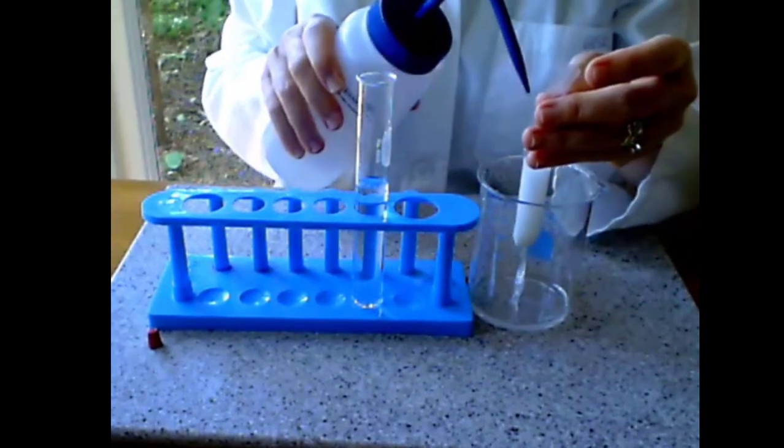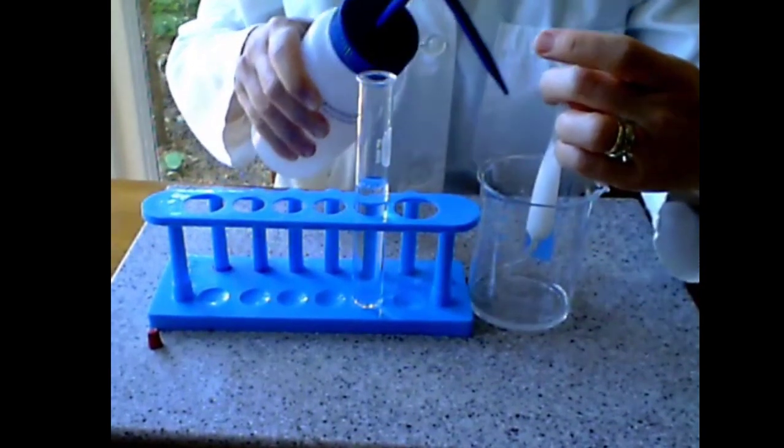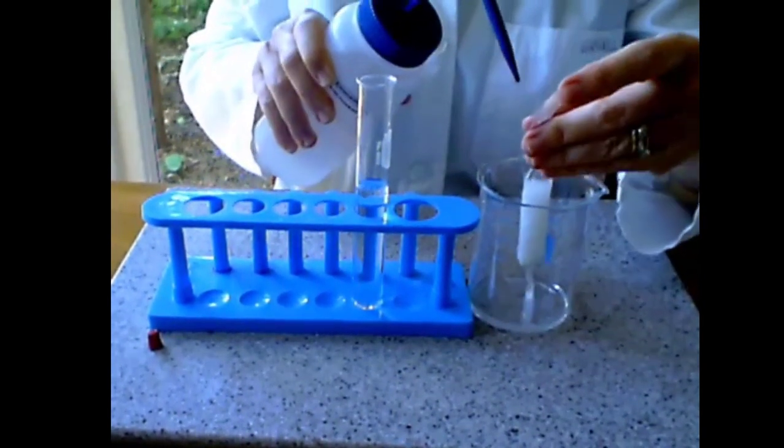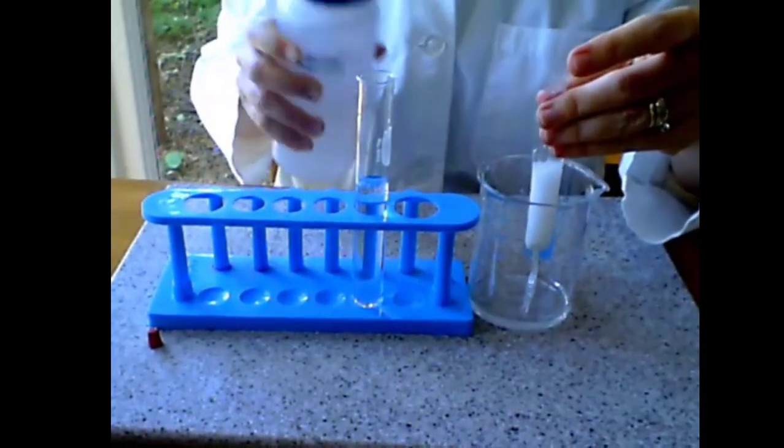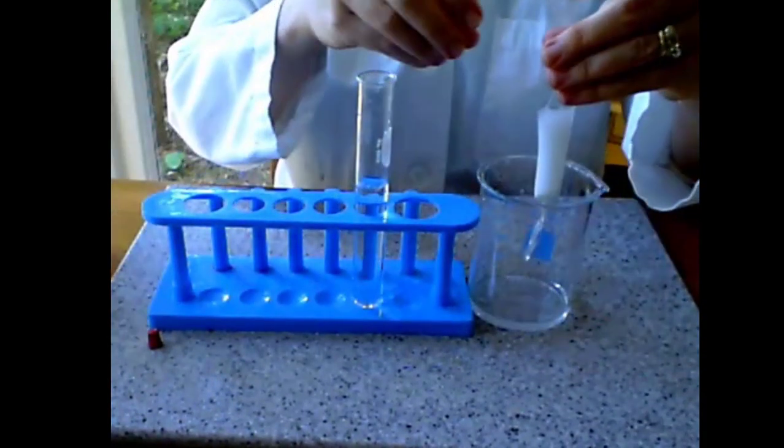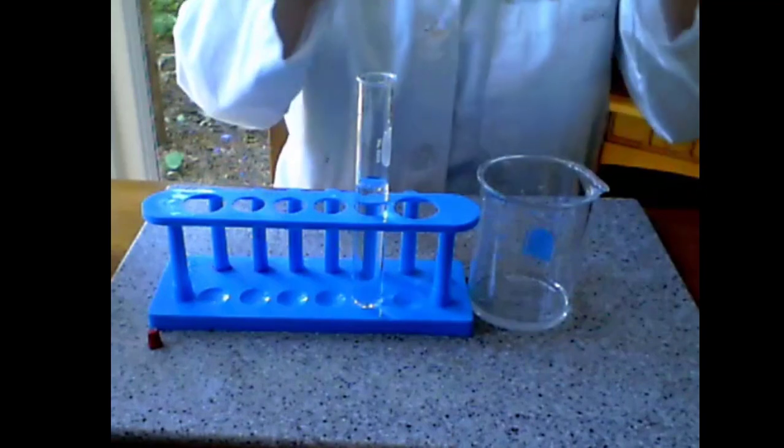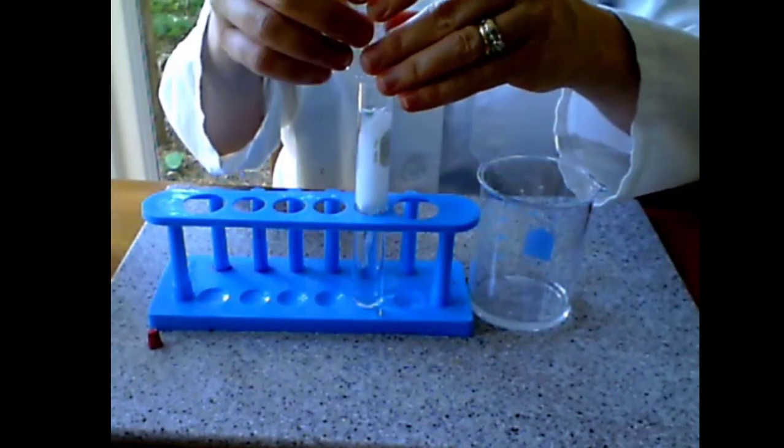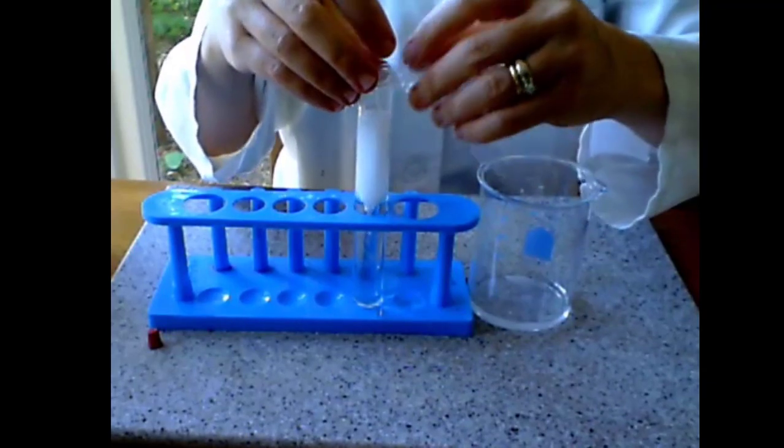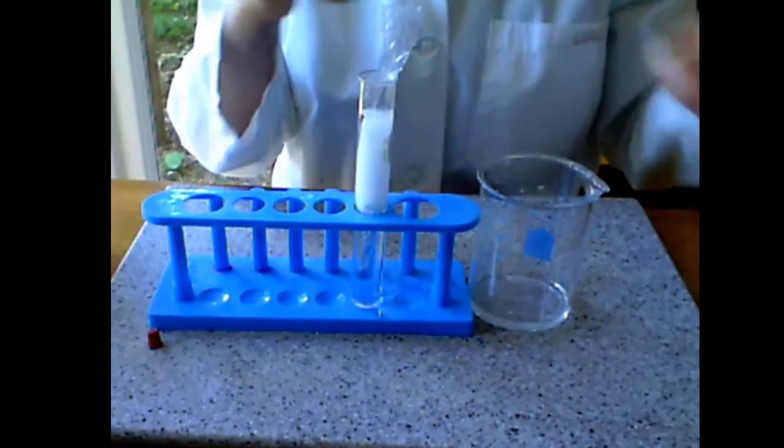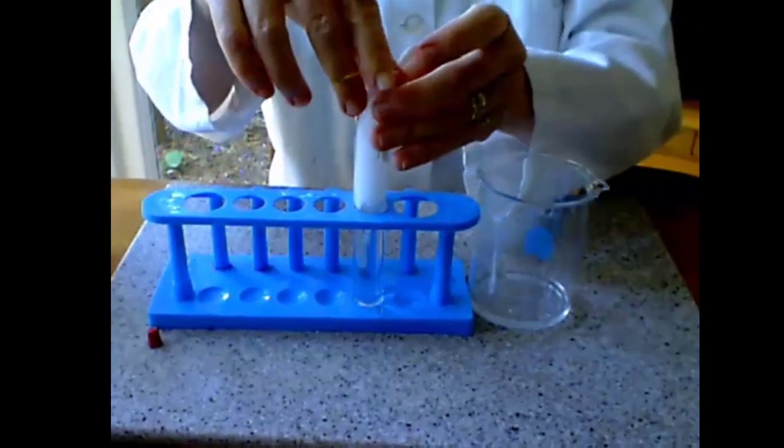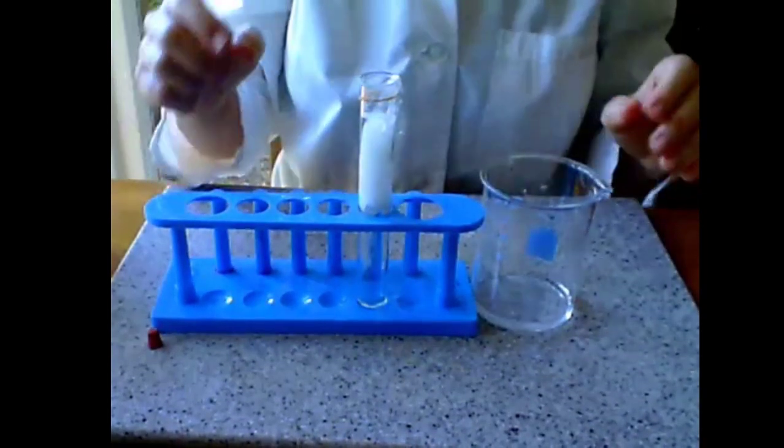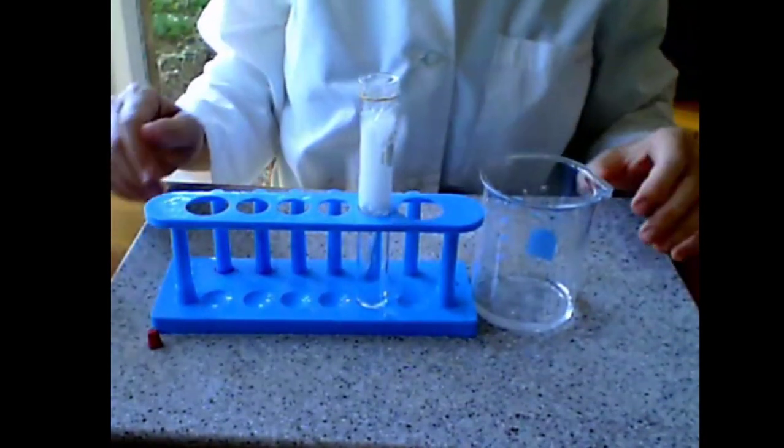We will now rinse the outside of the tubing in order to take any glucose or starch that might have spilled. And we are going to insert the tubing inside of the test tube that has pure water in it. Immerse the tubing into the water, and we are going to tie the top with the rubber band, just to secure it in place. And we leave it for 30 minutes.